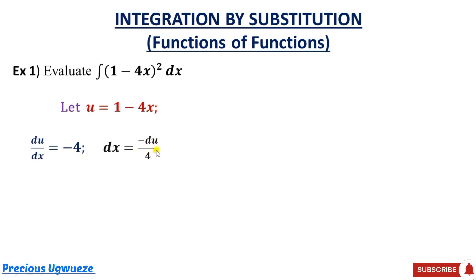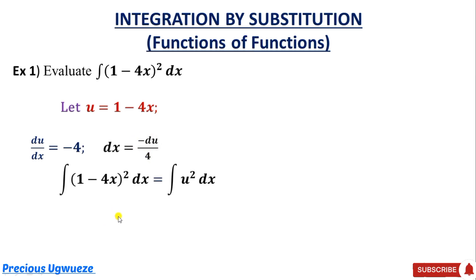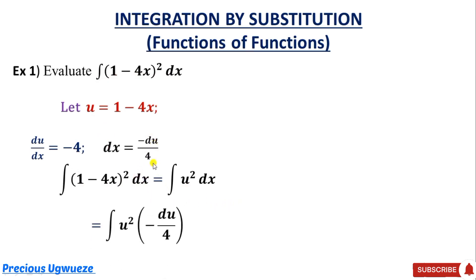If we do this differentiation we get the result, which you can also write as minus 1 over 4 du by fractions. So we now substitute into the given integral: 1 minus 4x becomes u, so we have u squared, and dx equals minus du all over 4.